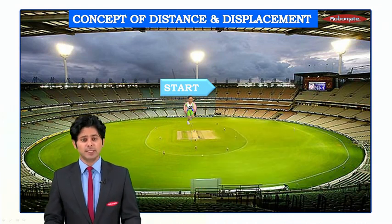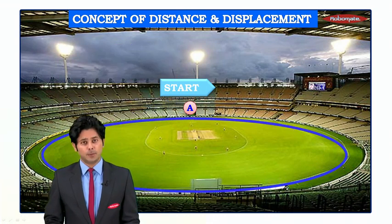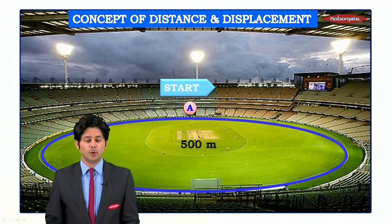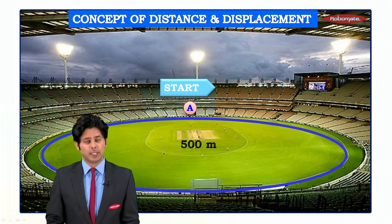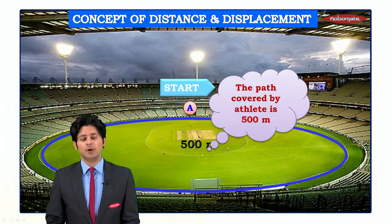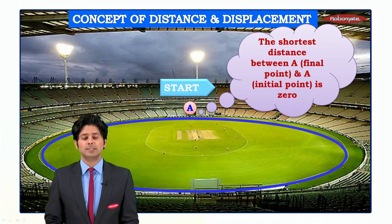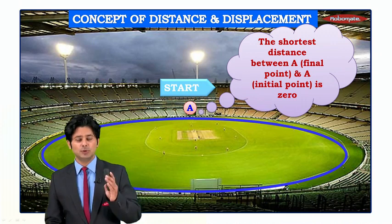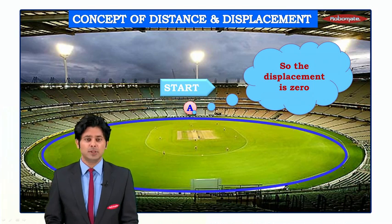Let's take another example. Now the athlete is at point A and goes back to the same point, so the initial point equals the final point. The distance traveled is twice the earlier value, that is 500 meters. However, since the initial point equals the final point, the shortest distance between them is zero — so the displacement is zero.